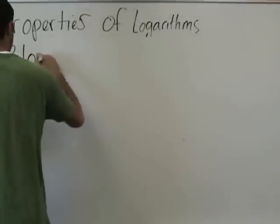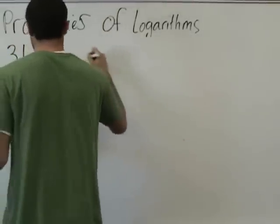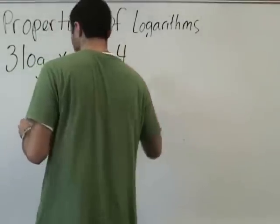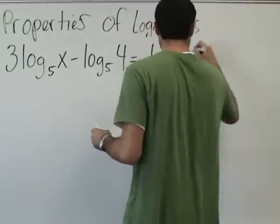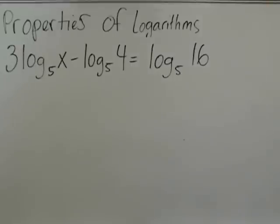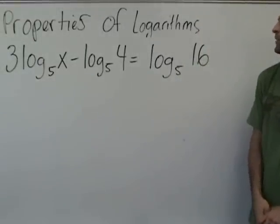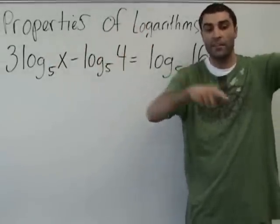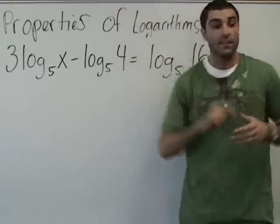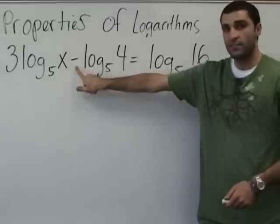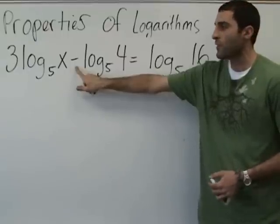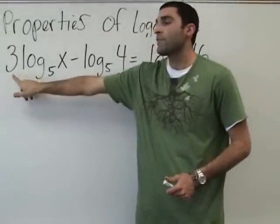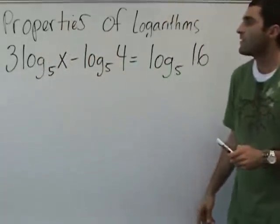Write the following problem. Log base 5 of 4 equals log base 5. So what is a major hint of this problem? 4 goes into 16. What do you think based on the properties that we did? Division. We also have subtraction. It's subtraction, so it's going to be division. However, before we create our division, let's do the exponent.